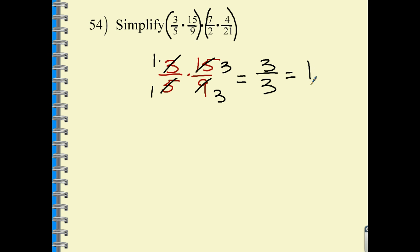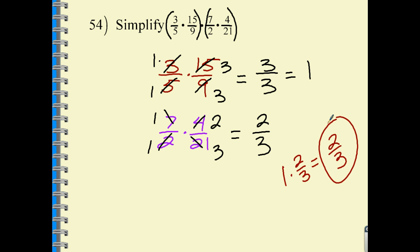We'll take that answer later on after we solve the second set. So we have 7 halves multiplied by 4 over 21. Let's do some cross canceling. We have 1 and 3 and 1 and 2. Multiply straight across. 1 times 2 is 2, 1 times 3 is 3. Now we're going to take both of those answers and get a product from them. So 1 multiplied by 2 thirds. Well, 1 times 2 thirds is equal to reduced, simplified, final answer: 2 thirds.